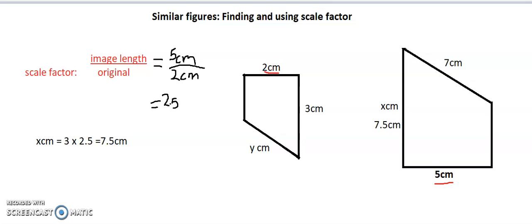Likewise if I look at my y. To work out my y centimeters is slightly different because we are going the opposite way. So I know we start off with 7 centimeters but we've downsized it. So we need to divide it by 2.5. So 7 divided by 2.5 is 2.8 centimeters.